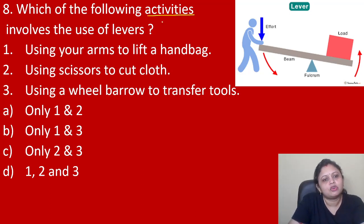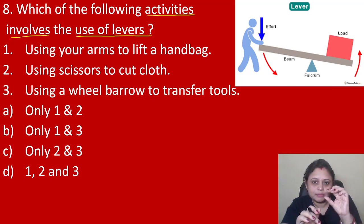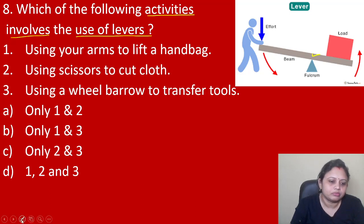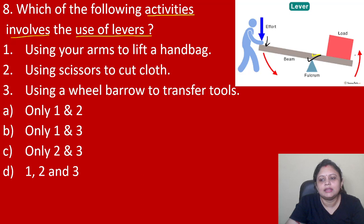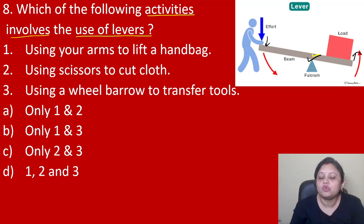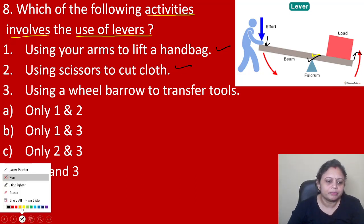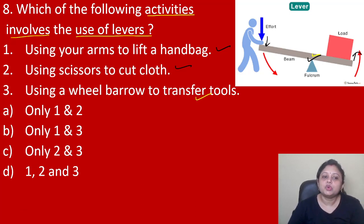Which activities involve the use of levers? A lever is a simple machine with a fixed point called a fulcrum. On one side we give effort, on the other side load is there. Using your arms to lift a handbag is also an example of a lever. Using scissors to cut cloth also has a fulcrum, load, and effort — it is a lever. And using a wheelbarrow to transfer tools is also an example. So the correct answer is option D: 1, 2 and 3.